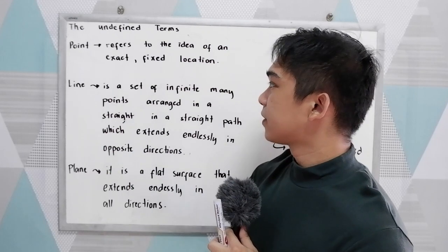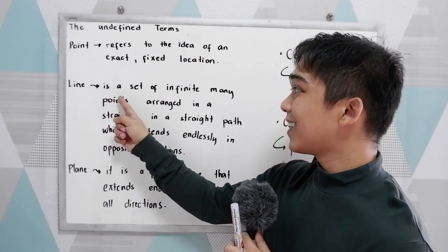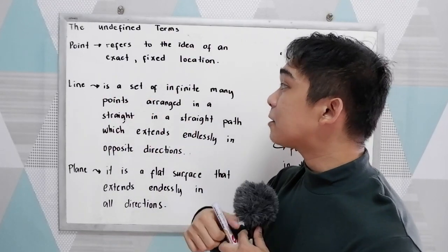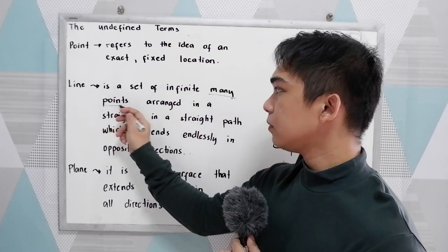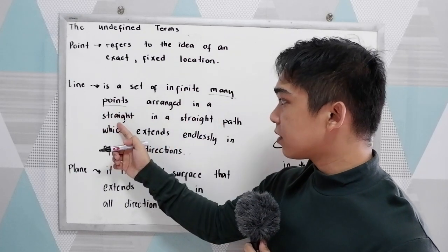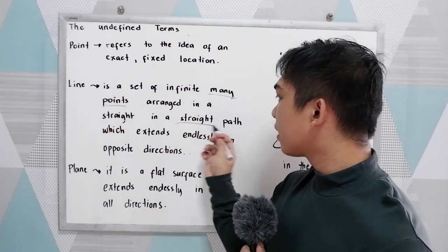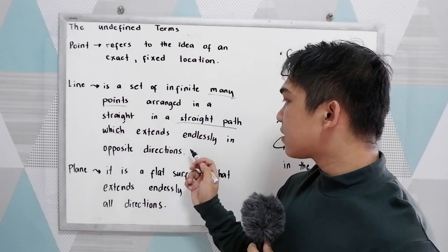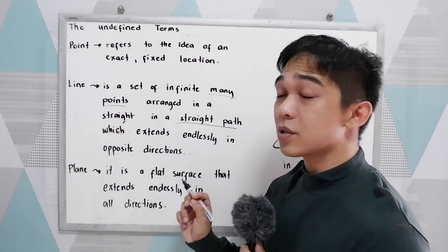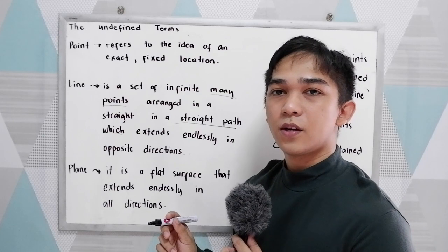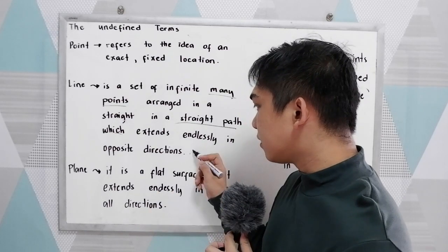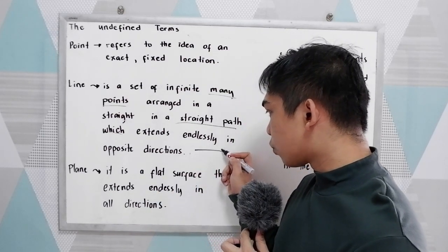Next we have the line. Line is a set of infinite many points arranged in a straight path which extends endlessly in opposite directions. So if we're going to draw a line, we'll come up with this one.